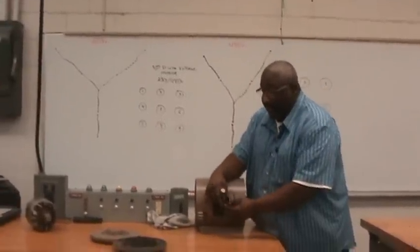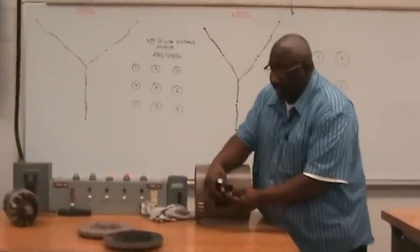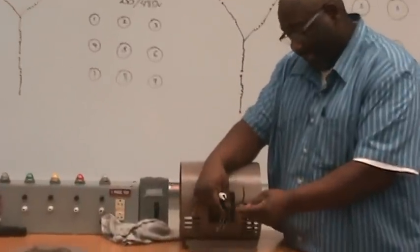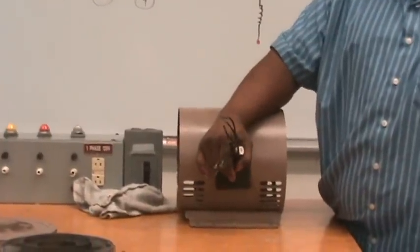I have nine leads coming out here. Each one of these leads has a mark. Each mark is called T1 through T9. So what do I do if I need to connect this for a high voltage or low voltage?